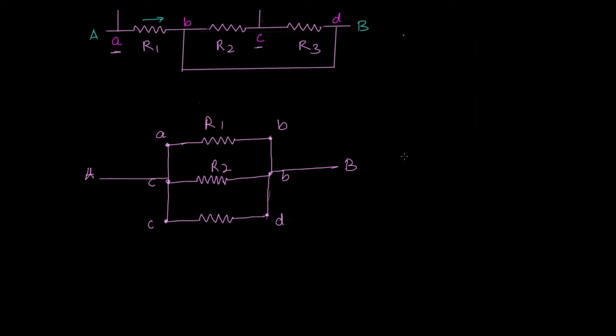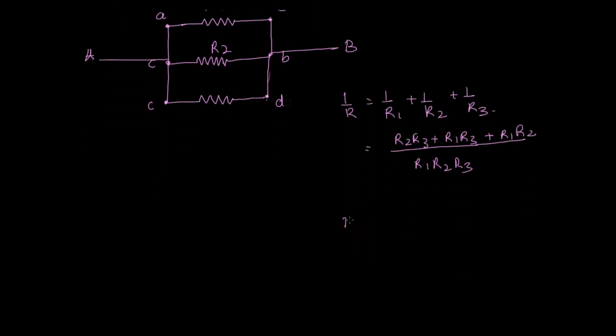They are in parallel, so what happens? My 1/R is equal to 1/R1 plus 1/R2 plus 1/R3. That is nothing but the equivalent resistance R is given by (R1·R2·R3)/(R2·R3 + R1·R3 + R1·R2). That is your equivalent resistor.